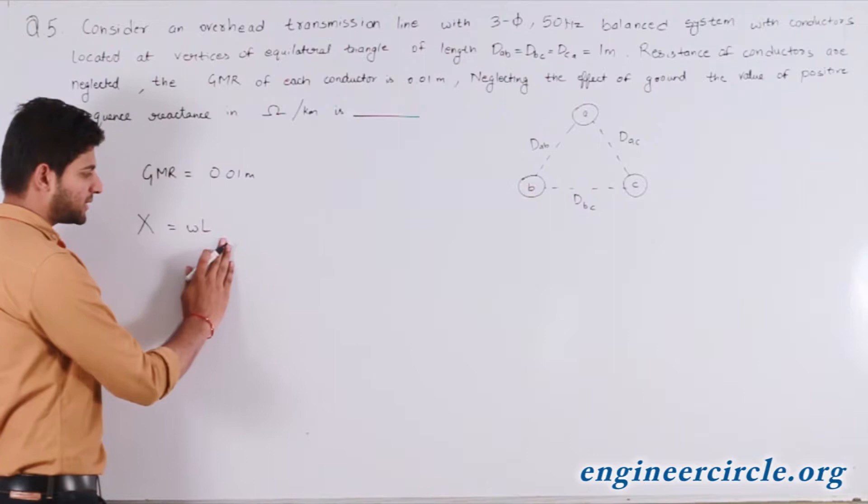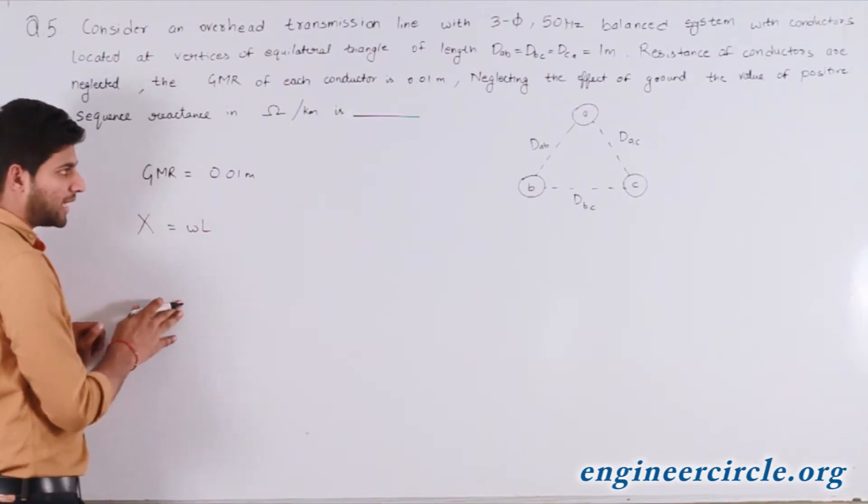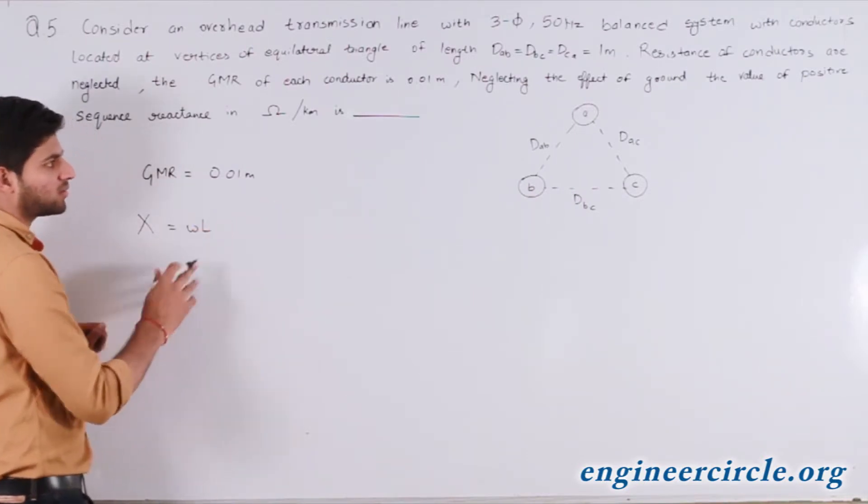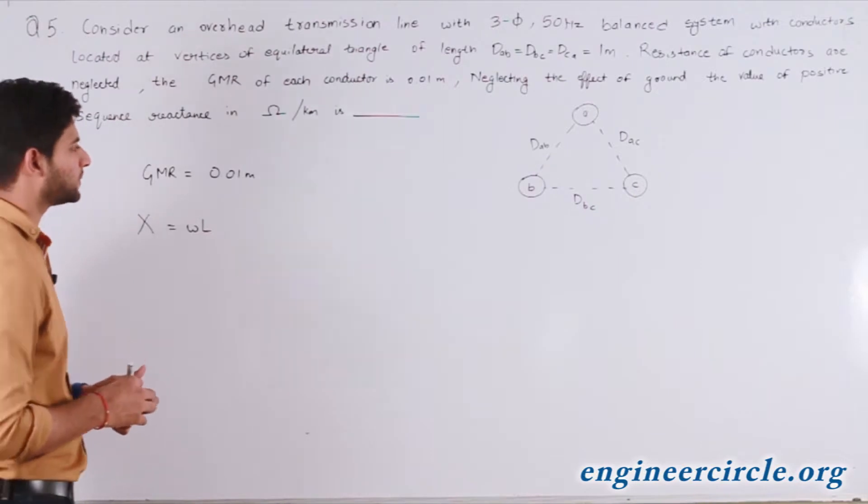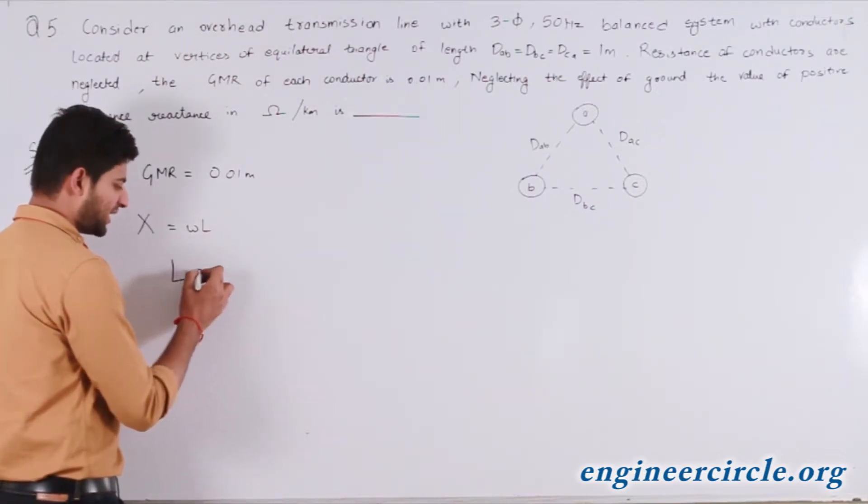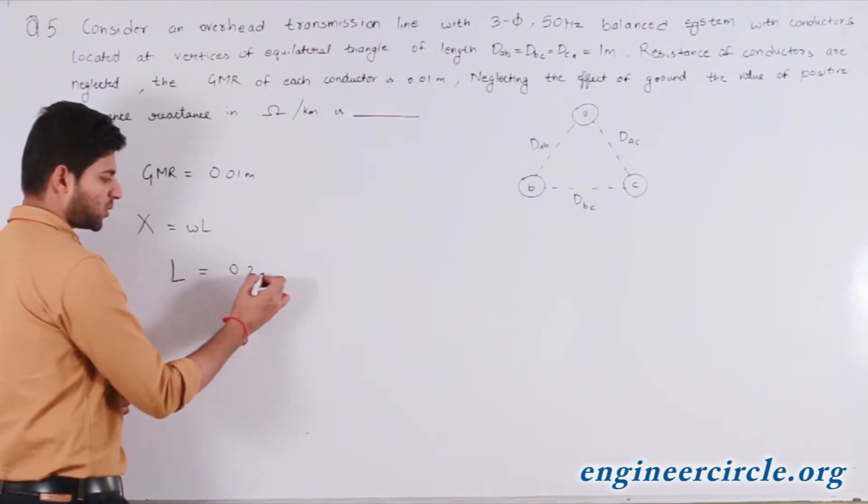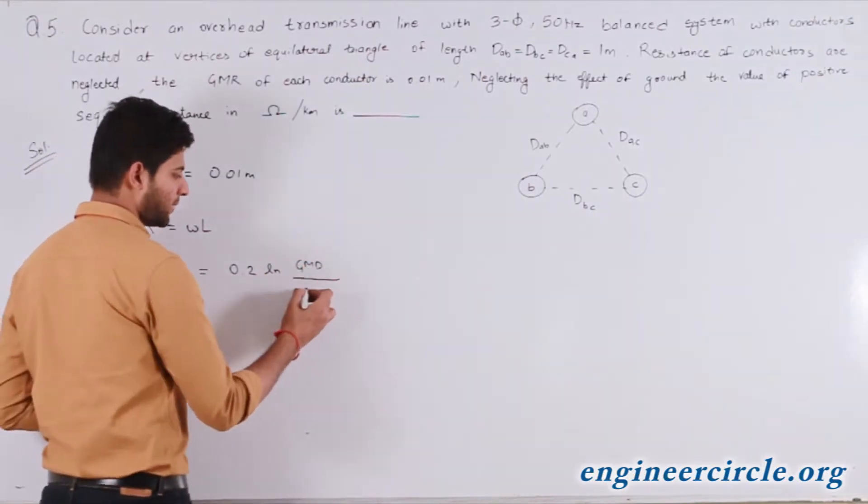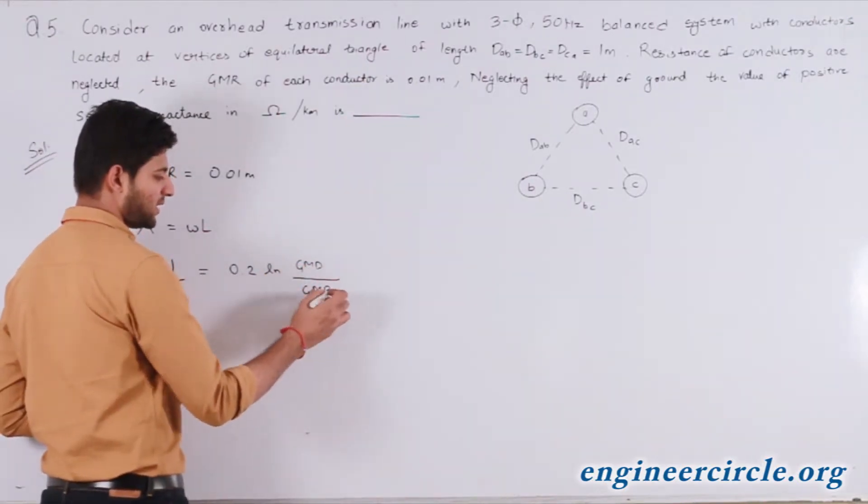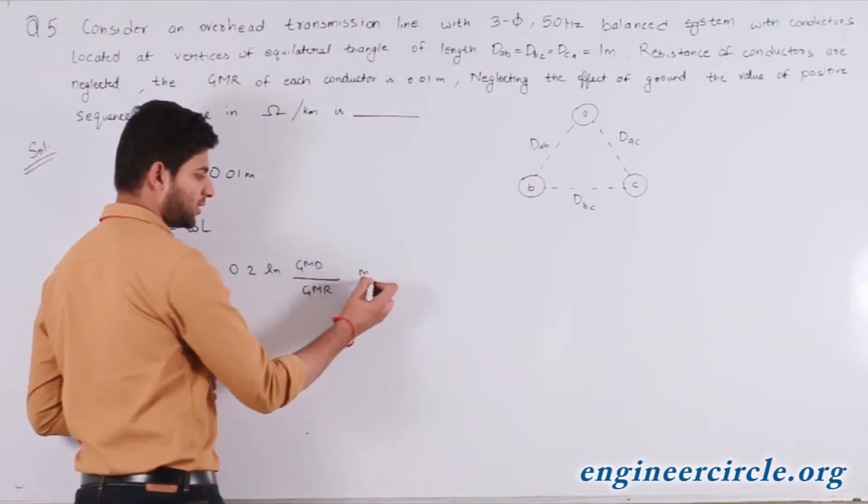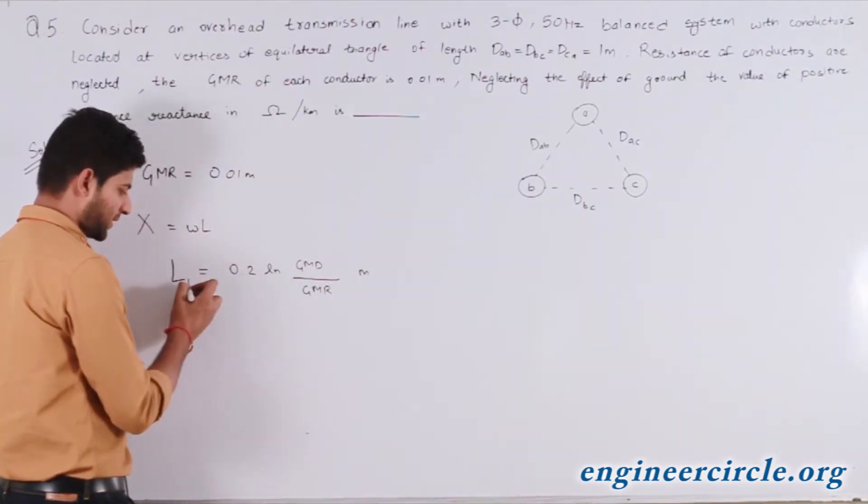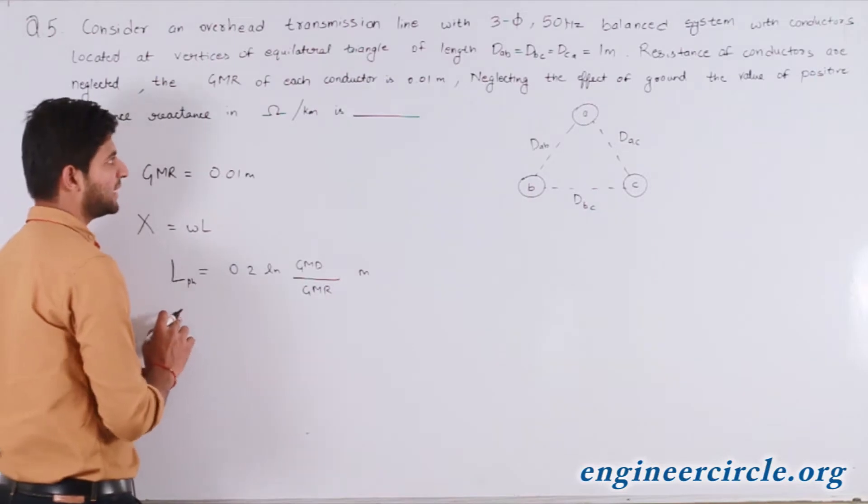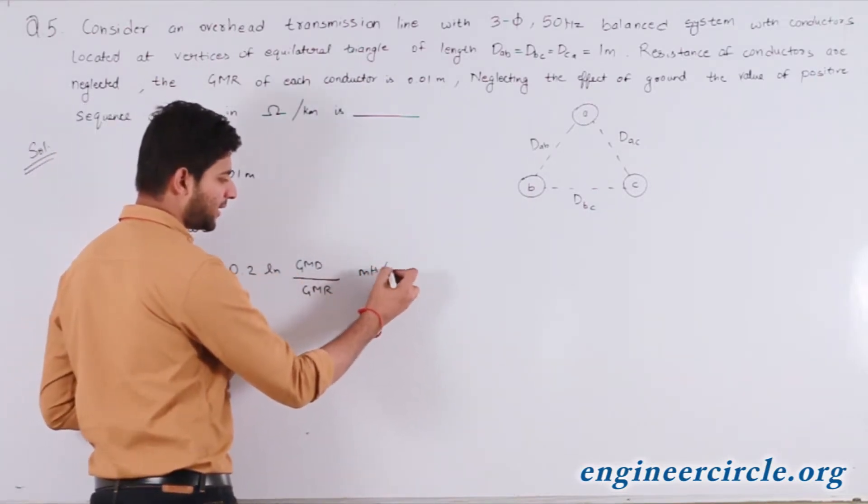The per phase inductance of this arrangement of bundled conductors or system of conductors can be found easily by L = 0.2 ln(GMD/GMR). This is the value of inductance per phase, calculated per phase in millihenry per kilometer.